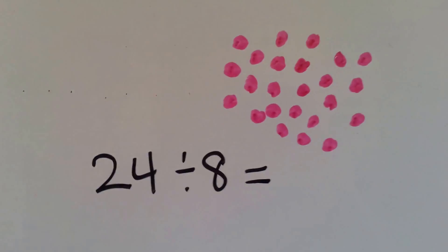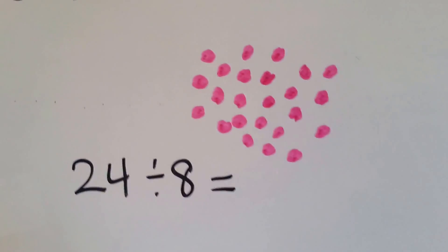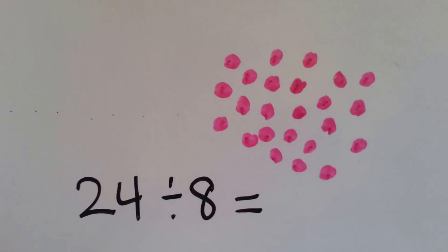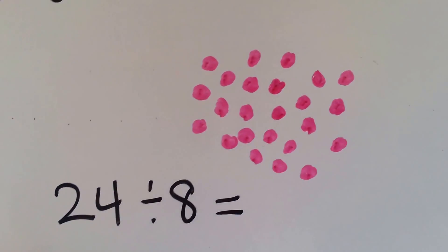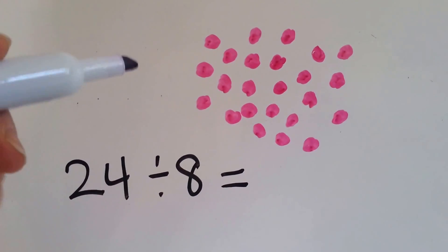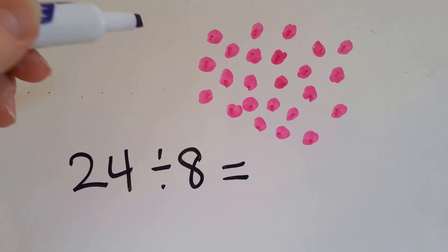Now we have 24 divided by 8. We are going to circle groups of 8. So we're going to find 8 little pink dots and we're going to put a circle around each group of 8 dots.